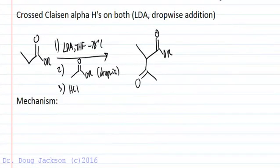What if we have a cross Claisen with alpha hydrogens on both? It's very similar to the aldol in that we're going to add our first ester that we want to form the enolate. We're going to add this dropwise to a prepared solution of LDA and THF so that we form the enolate in entirety, goes to completion, there's no equilibrium going on. This particular one would form an enolate that looks like this.